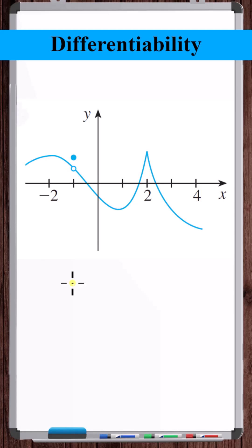For a function to be differentiable at a point, the function must be continuous. So if there's a discontinuity, it's not differentiable, no matter what. So x is equal to minus one, it's not differentiable.